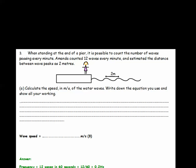When standing at the end of a pier, it's possible to count the number of waves passing every minute. Amanda counted 12 waves every minute and estimated the distance between wave peaks as 2 metres. Calculate the speed in metres per second of the water waves. Write down the equation you use and show all your working.